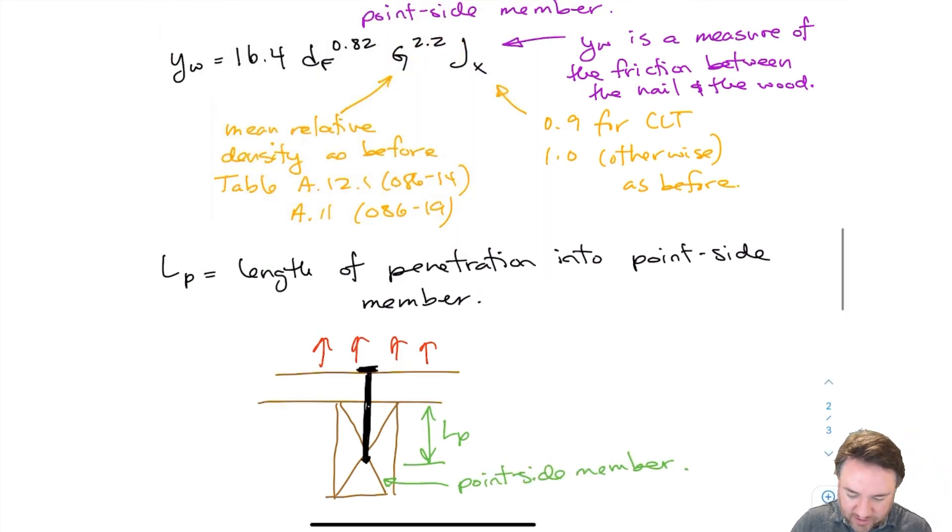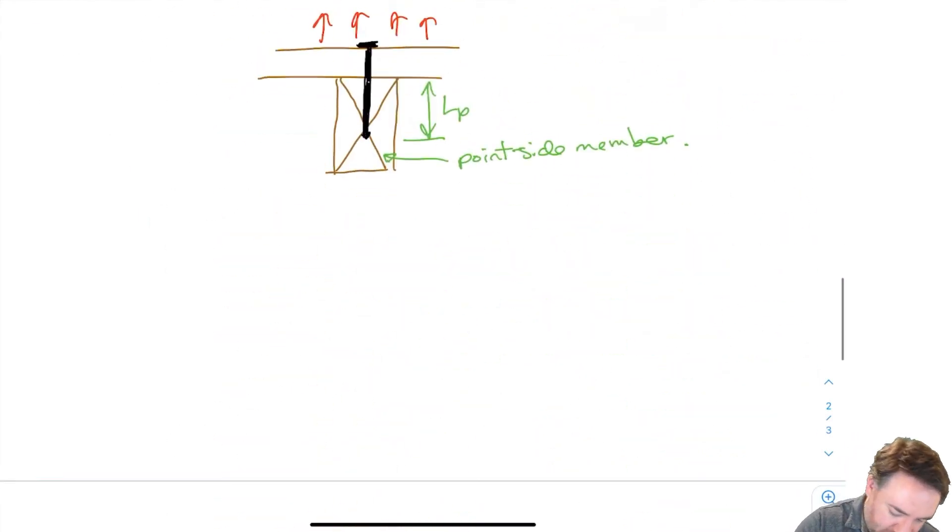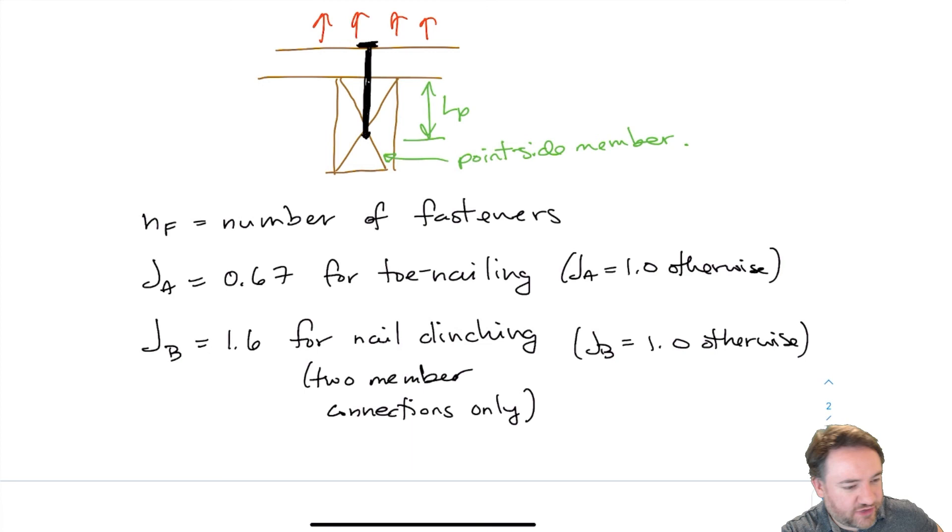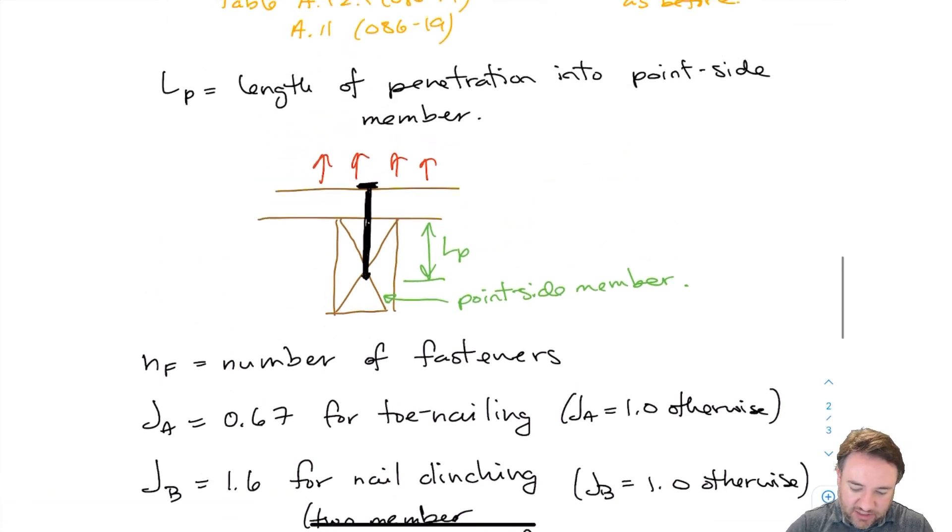Okay so for the other parameters we have NF, JA and JB. So NF is just the number of fasteners so obviously the strength scales with how many fasteners there are. JA is a toenailing factor, 0.67 this time which is smaller than it was for the lateral resistance equations. And JB is for nail clinching which I am sure that you can understand would certainly help for pull out. If I clinch the end of the nail it's going to be harder to pull that nail out.